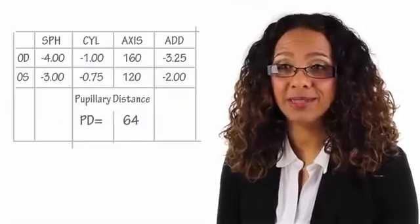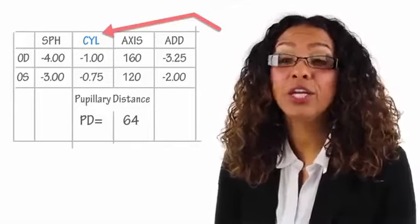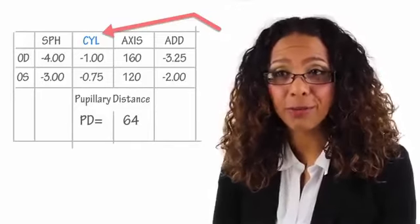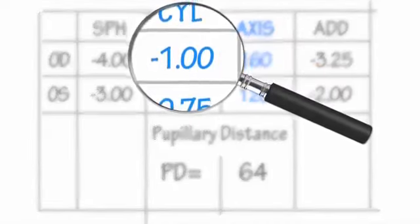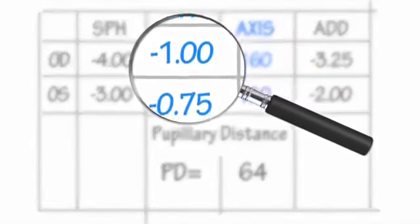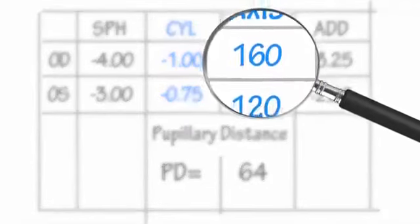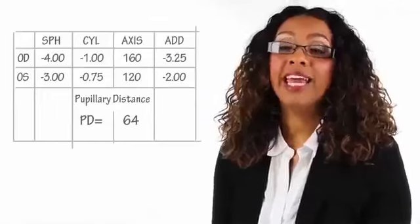These next terms won't always be seen on your prescription — it just depends if you have astigmatism. Astigmatism is a visual condition where the eye isn't completely spherical but is shaped more like a football. If you do have astigmatism, you'll see CYL, which is the degree to which your eye is shaped like a football, and you'll also see axis, which represents where the vision is blurred, from 1 to 180 degrees.